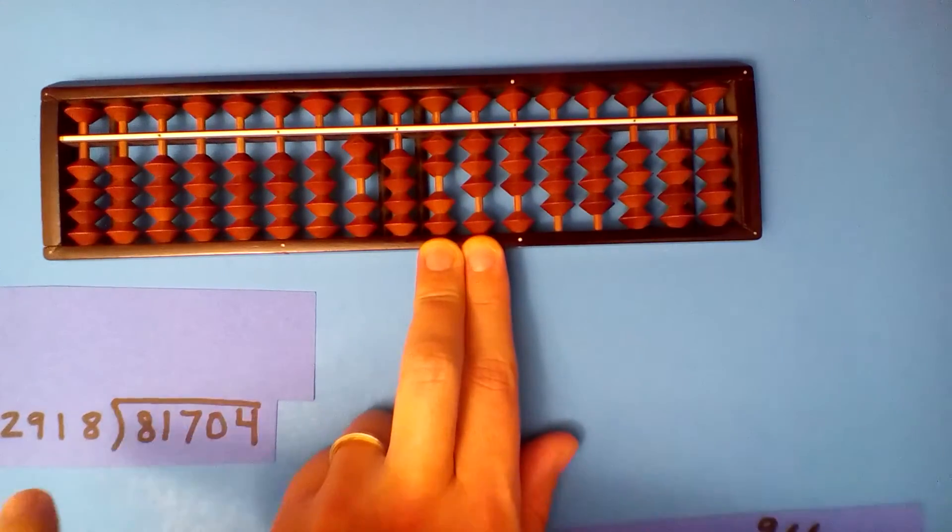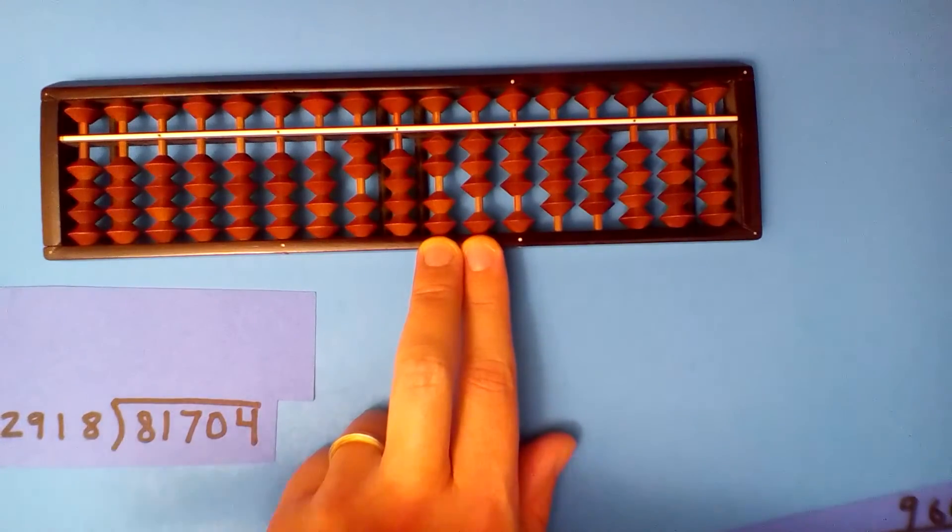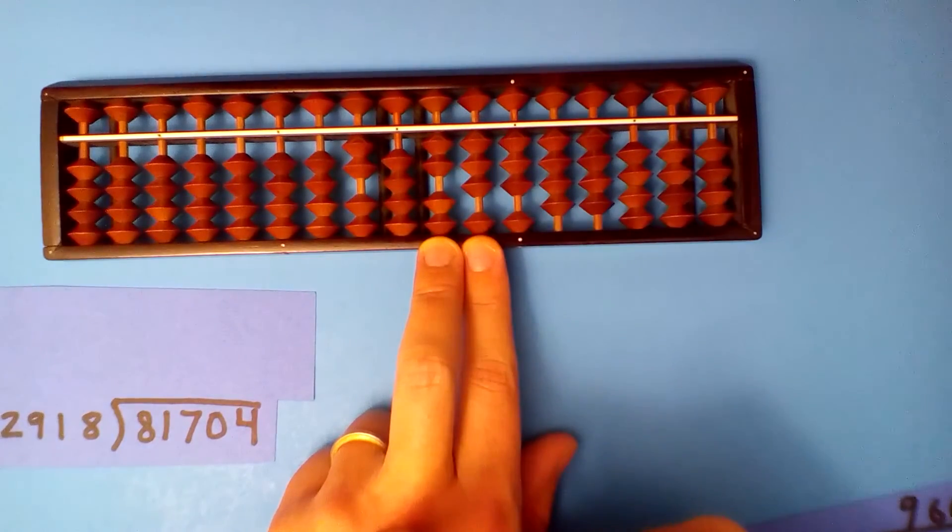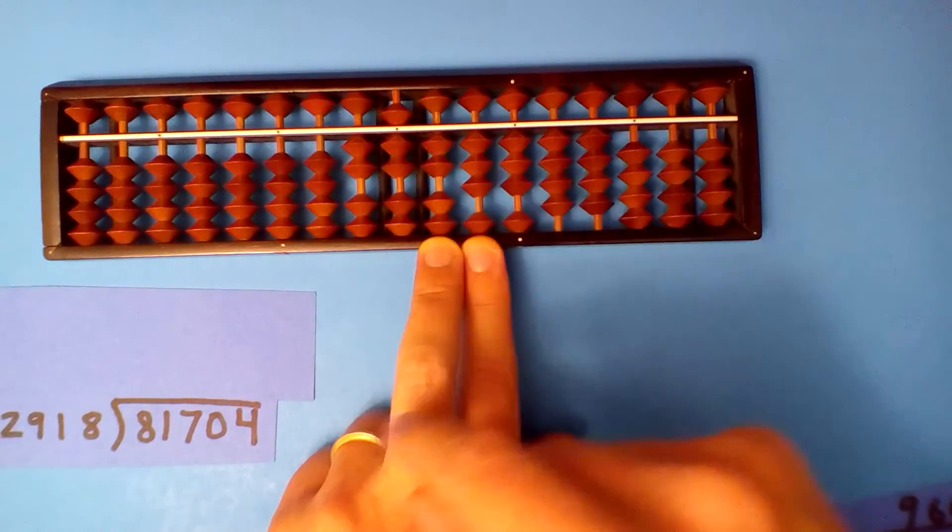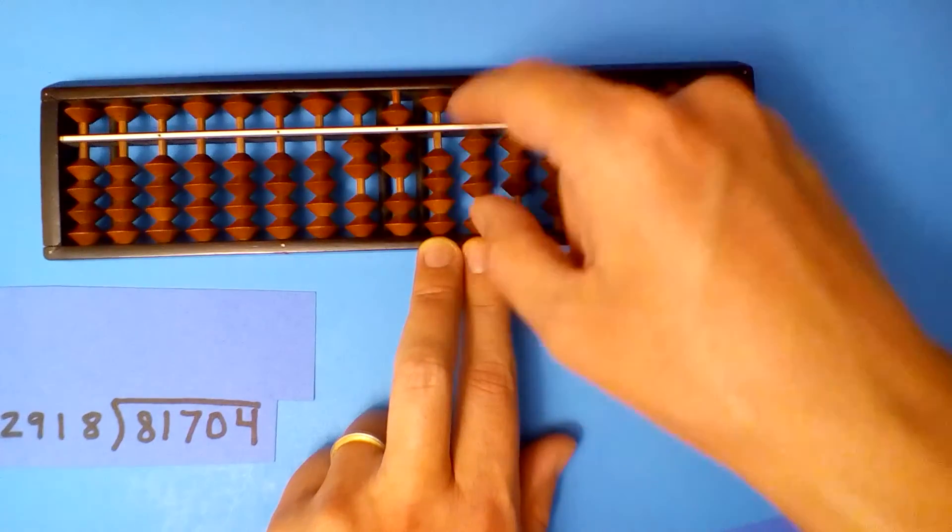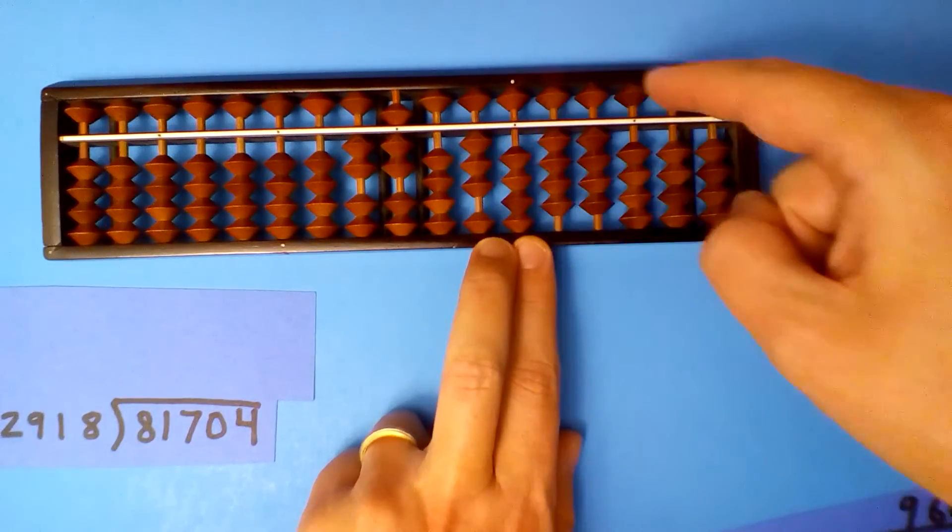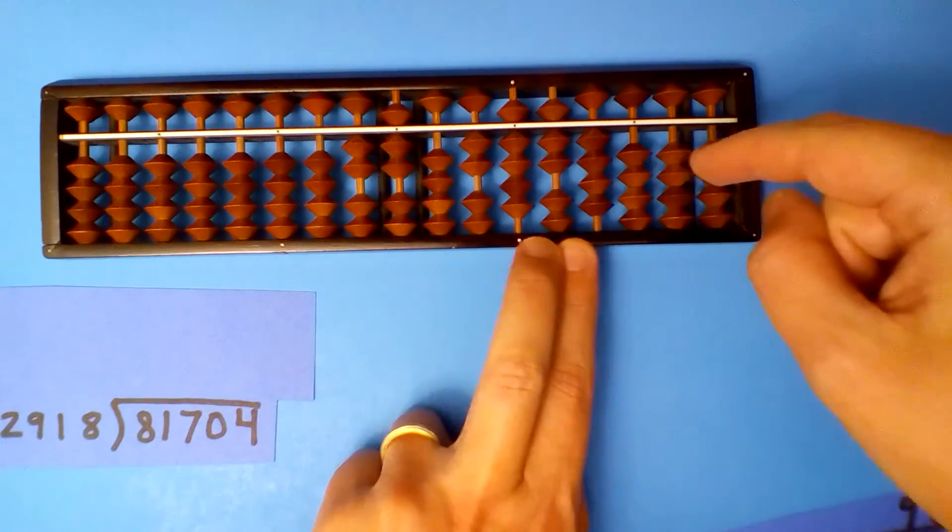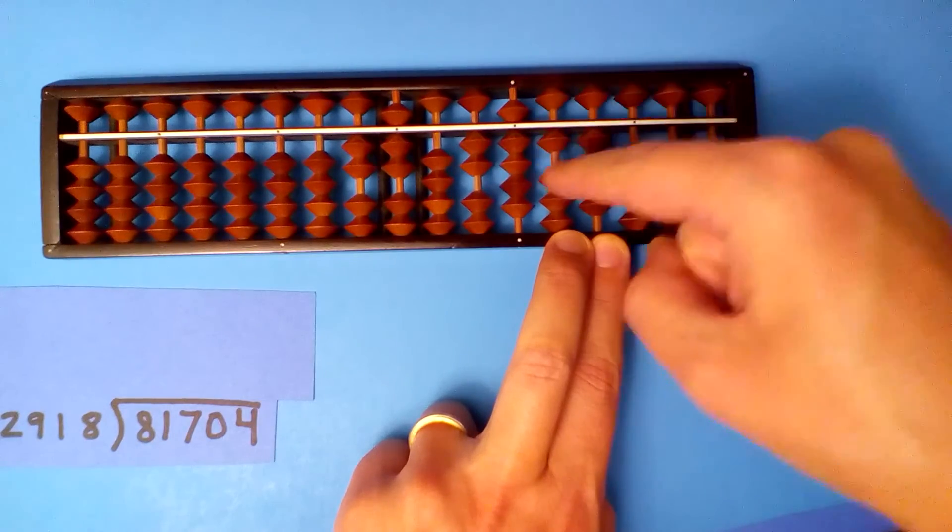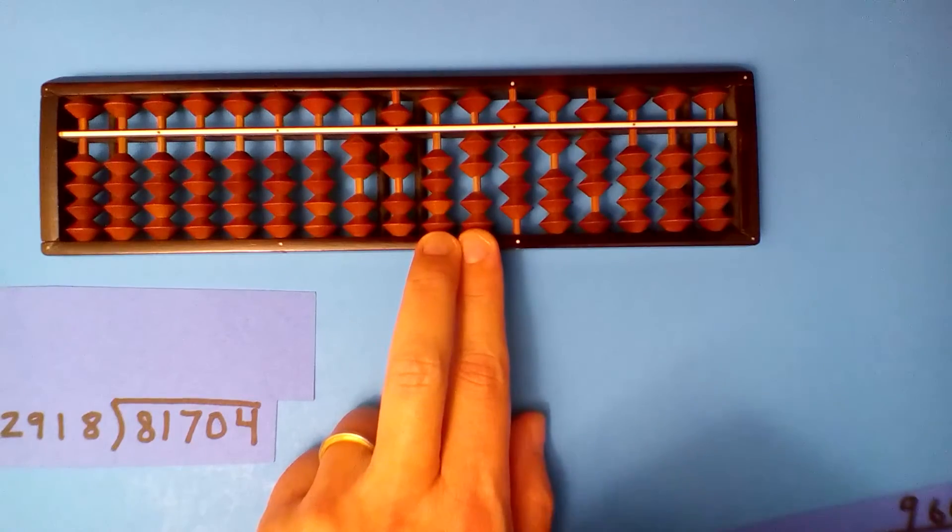How many times does 2.9 go into 23? Well, 3 goes into 21 seven times, so I think we'll say 7. 7 times 2 is 14, 7 times 9 is 63, 7 times 1 is 7, 7 times 8 is 56.